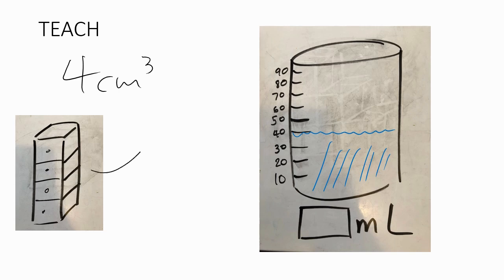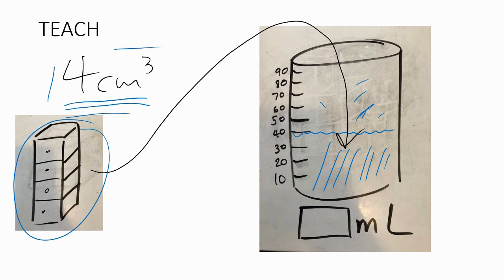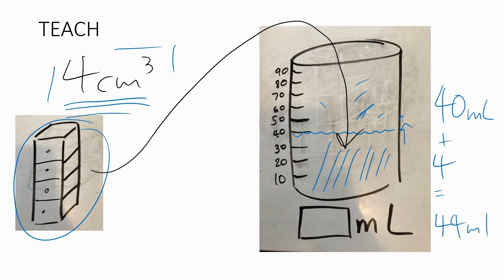If I pick this up and drop it in here with a splash, the water is actually going to go up 4 millilitres, because the space taken up by this object is exactly 4 centimetres cubed, which is going to shift this water up 4 whole millilitres. That means it's going to be 40 millilitres plus 4, which means it's now going to be 44 millilitres. The amount in the beaker will now be 44 millilitres.